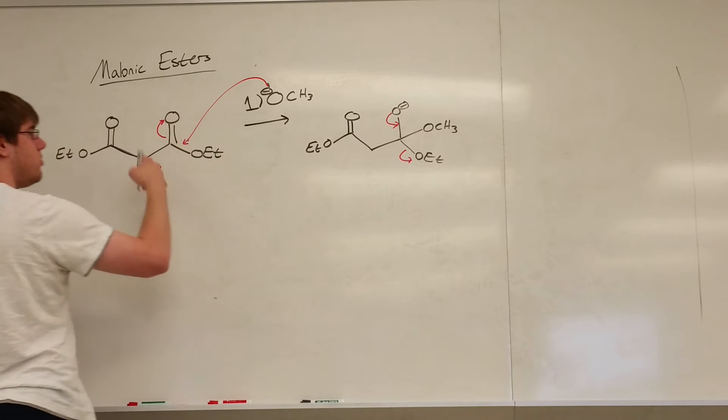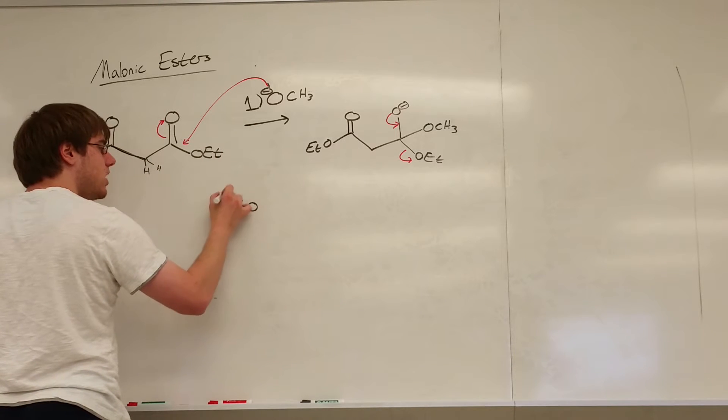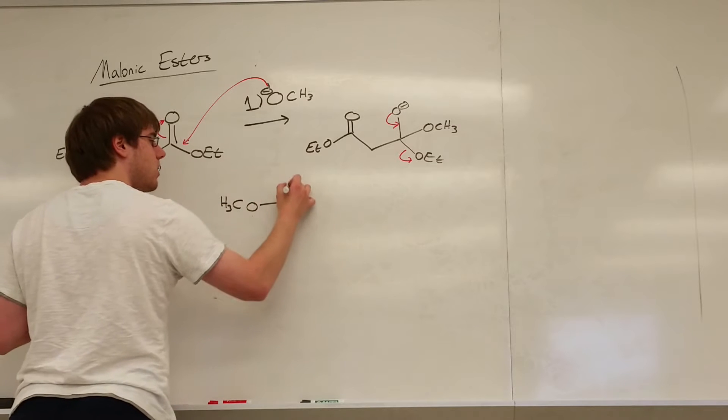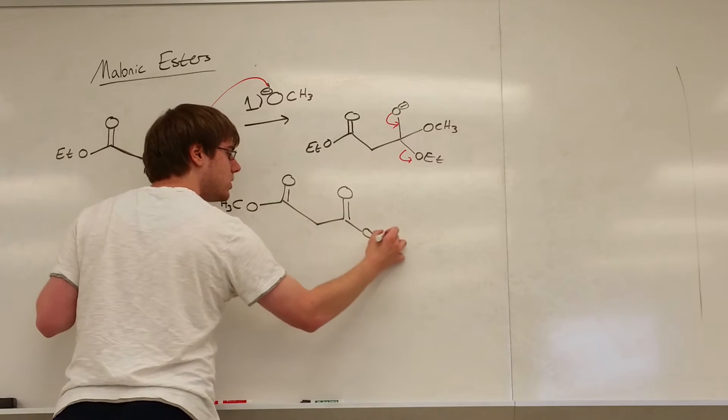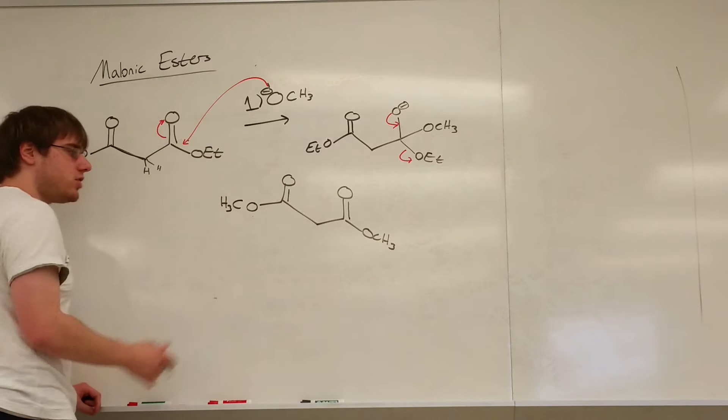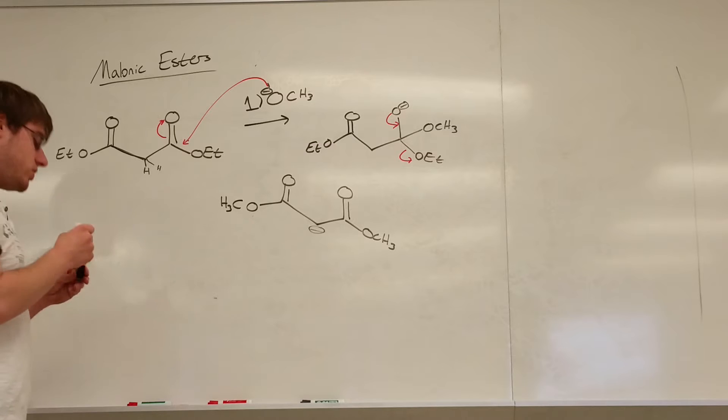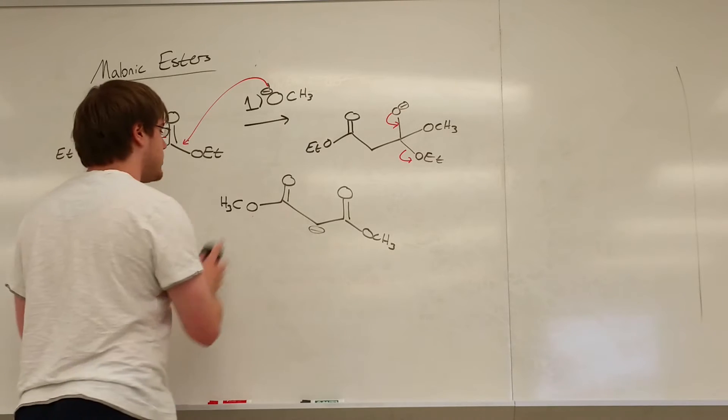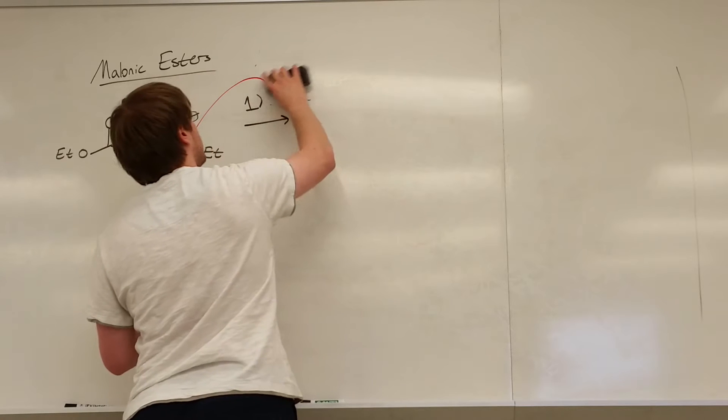You would end up getting, after two rounds of this, both of these would be replaced, you'd be left with OCH3 for both of those esters. And then that OCH3 could pull off a proton and make this negative. So this is the reason why whenever you're doing a malonic ester synthesis, make sure that the OR group is the same as your base.